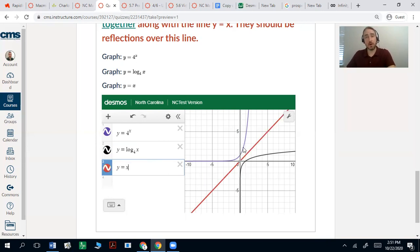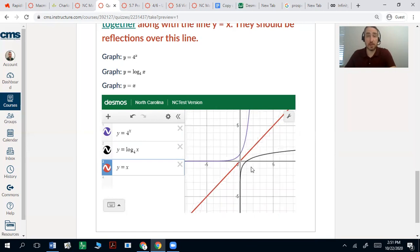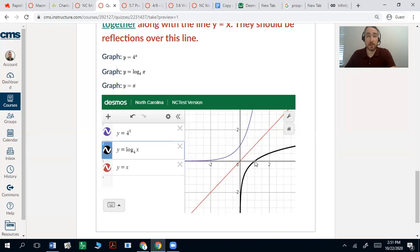you can see that these graphs are mirror images over this diagonal line y equals x. That's how you can tell they're inverses of each other—they're reflections over that line. And what that means is the x and y values are swapped.